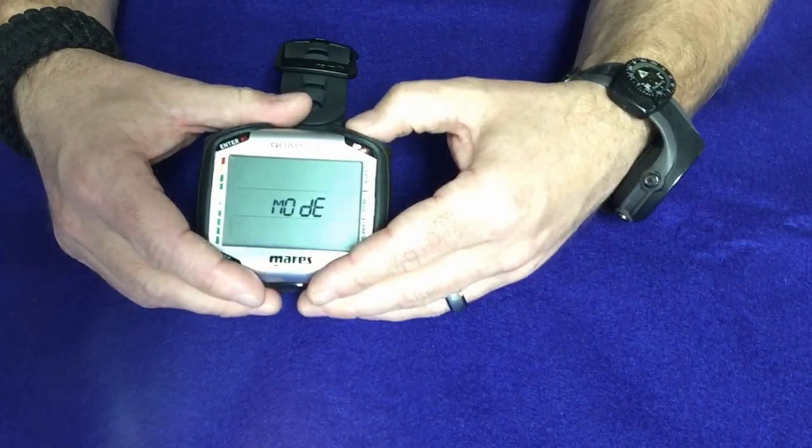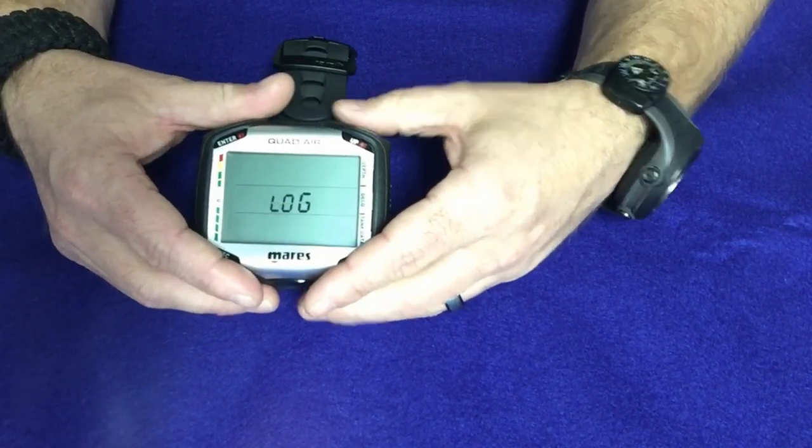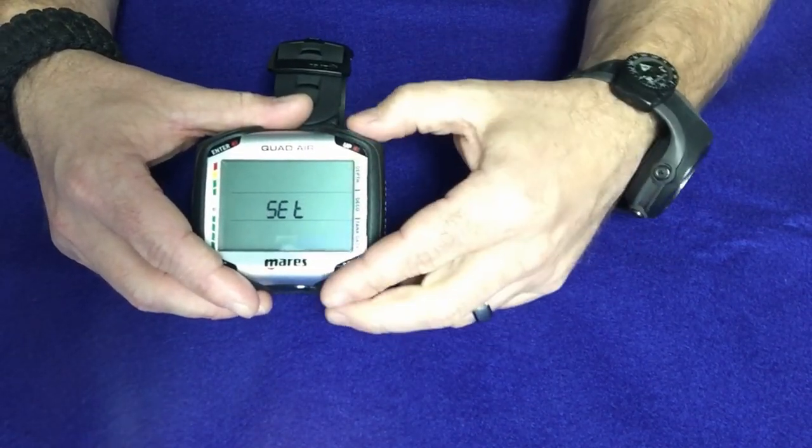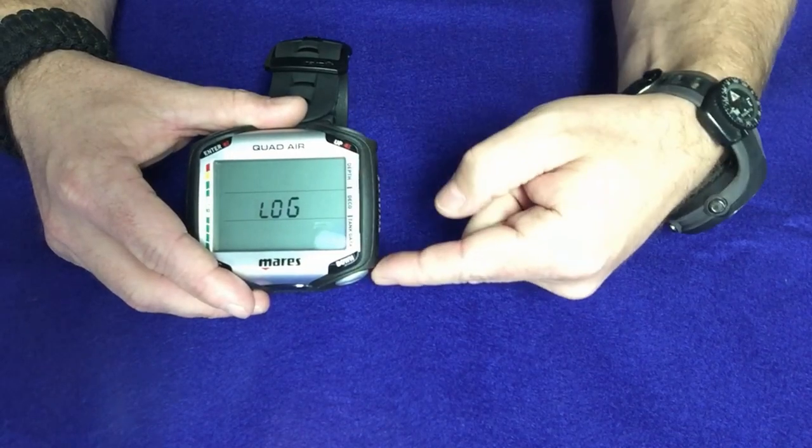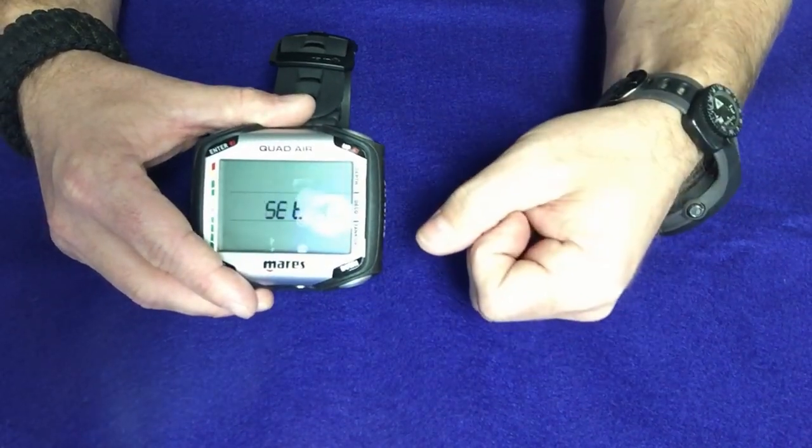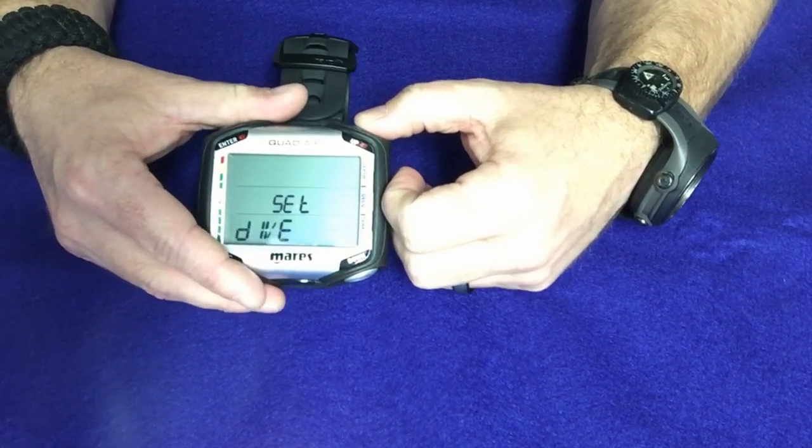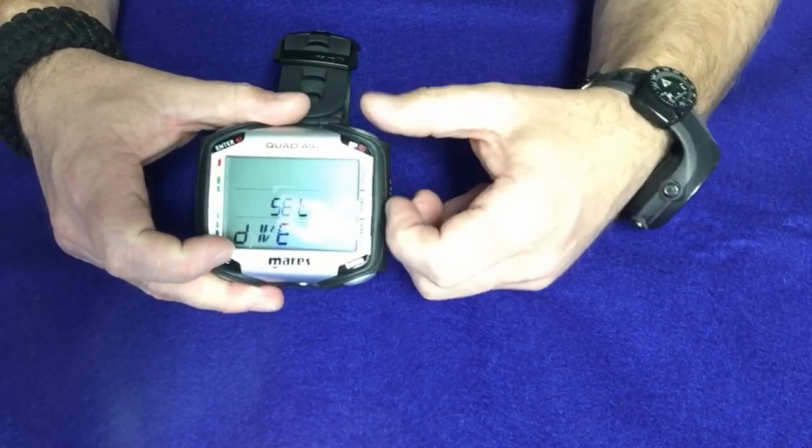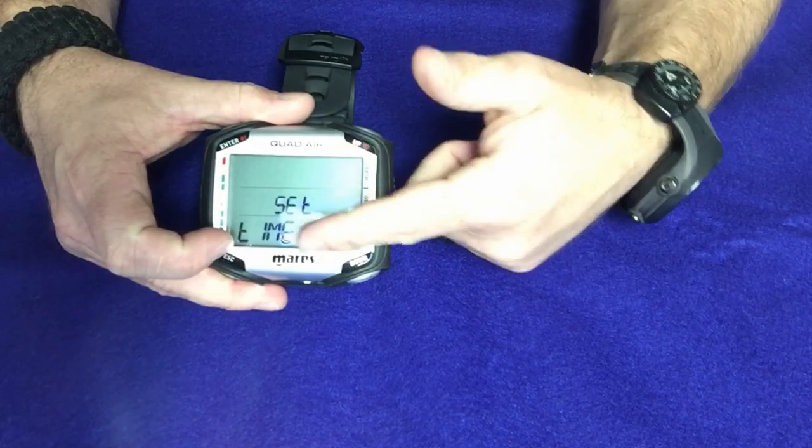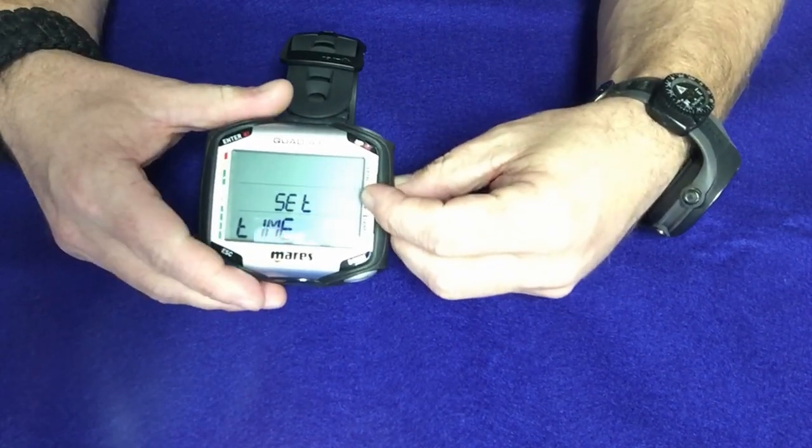Now once you're into surface interval mode, it won't actually do that. So we're just going to simply scroll on back through here. If you go too far, you notice I went too far there. It went into log. You can actually hit the down button and it'll actually back up as well. So going back into the set mode, we did the set dive. Now we're going to set time. So I simply hit the up button to go to time and I'm going to hit the enter button as well.